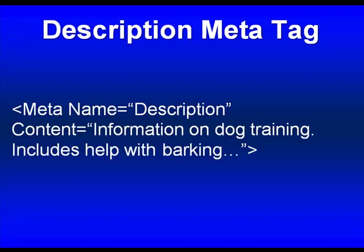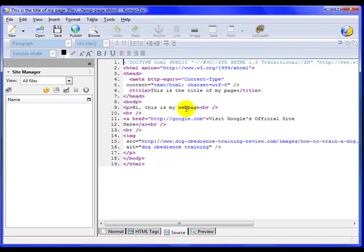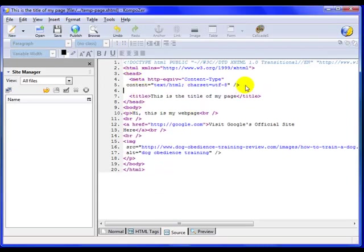Moving on: the Description meta tag. This is also important — not as important as the title, but still important. This is a chance for us to describe what the page is about. The code you use is: meta name equals description, content equals 'information on dog training, includes help with barking.' I would just take that, copy it, and paste it right into my page.